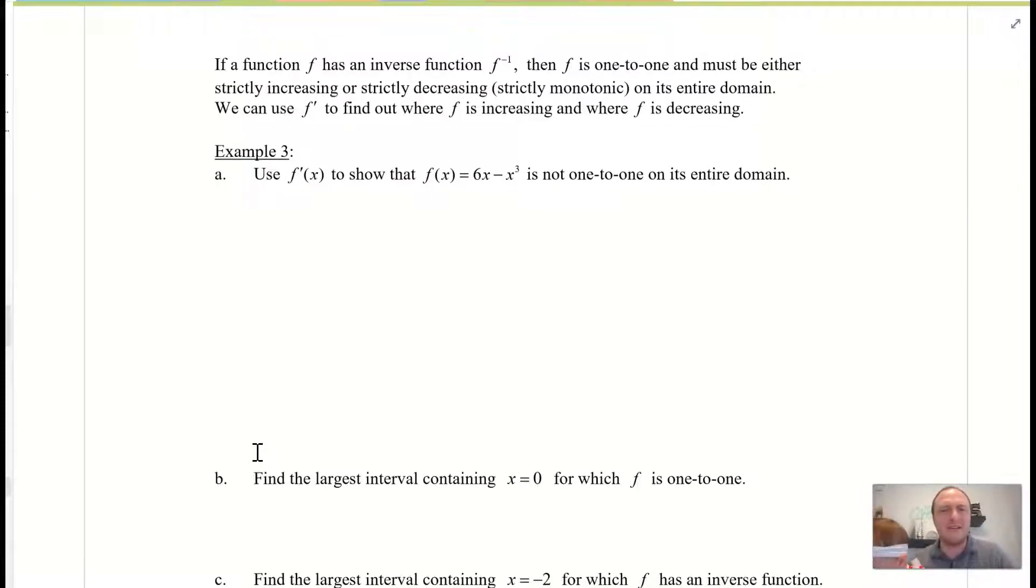So, example three. Here it says, use f prime of x to show that f of x equals 6x minus x cubed is not one to one on its entire domain. Okay. Well, if a function is one to one, then it's going to be monotonic. Okay. So, what we can do is we can go ahead and identify. Let me see if I can do this.